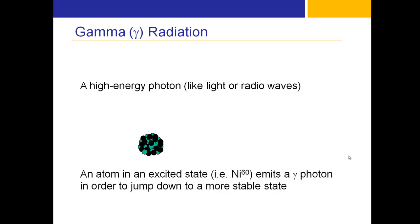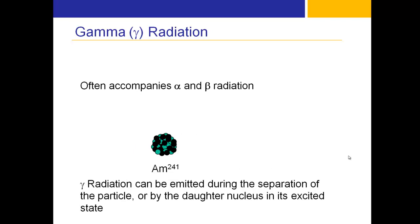For example, nickel-60 emits a gamma photon in order to jump down to a more stable state after receiving a large influx of energy through nuclear fission or nuclear fusion. It's in a very excited state, and in order to stabilize, it emits gamma radiation. Gamma often accompanies alpha and beta radiation, but it doesn't have to.